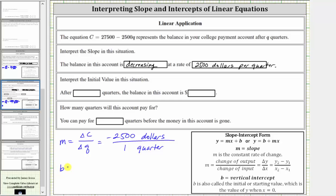So notice in our equation, B is equal to 27,500, which is the initial or starting value of the college payment account when Q, the number of quarters, equals zero. So as a complete sentence, we can say after zero quarters, right before you start college, the balance in the account is 27,500 dollars.